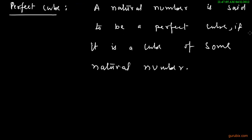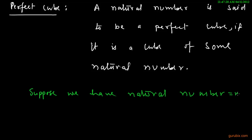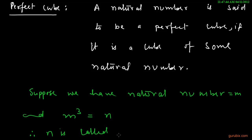Let me make you understand in a proper way. Suppose we have a natural number m and the cube of m is equal to n. Therefore, this n is called the perfect cube of the given number m.